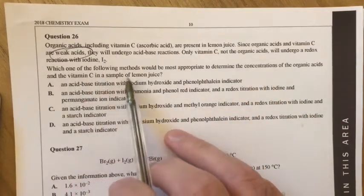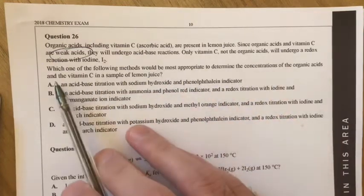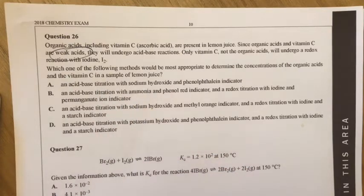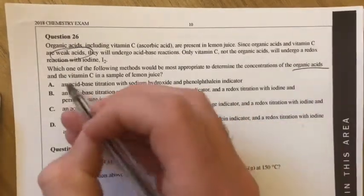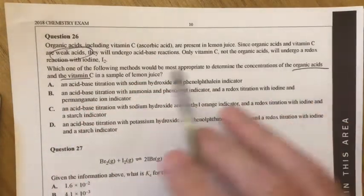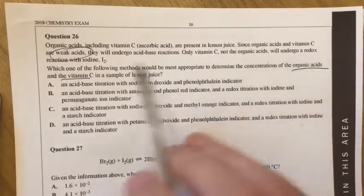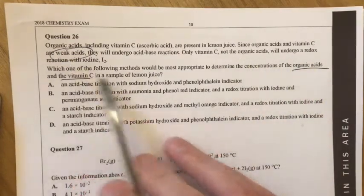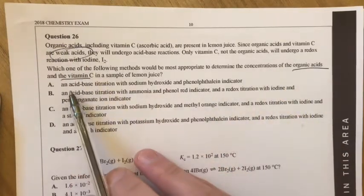Which of the following methods would be most appropriate to determine the concentration of organic acids and the vitamin C in a sample of lemon juice? If we want to look for the organic acids and vitamin C, we need to make sure that they can actually both undergo the reaction. Organic acids can't undergo the redox reaction, but weak acids can, so therefore the redox reaction is out, but they can undergo an acid-base titration.